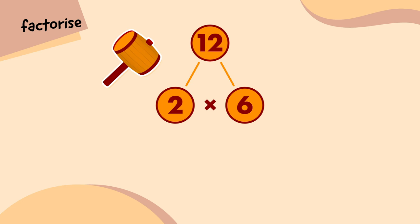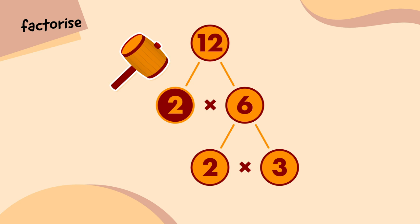Can 6 be broken down any more? There we go — 2 times 3. Again, 2 times 3 is still equal to 6, but just expressed differently. Can we go even further? Well, we already know that 2 can't be broken down further. But what about 3? No, it looks like 3 can't either. That means 2 and 3 are both prime numbers.